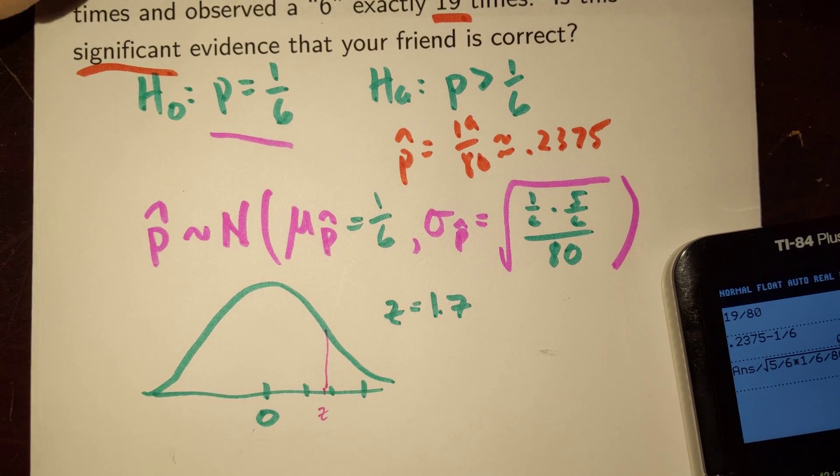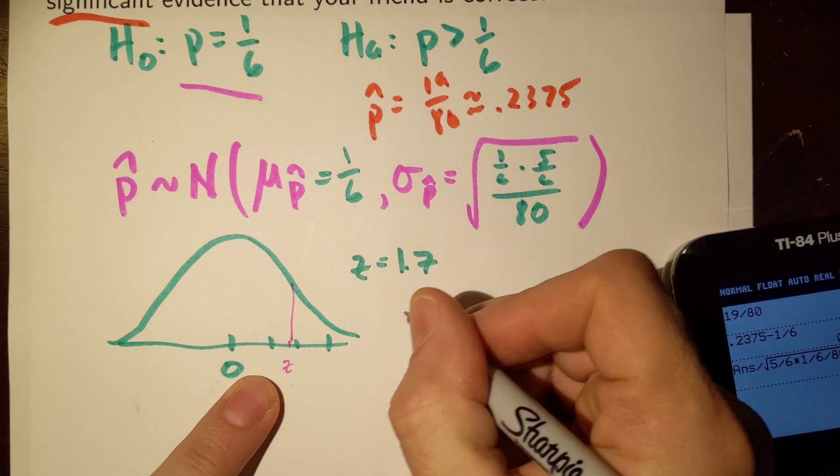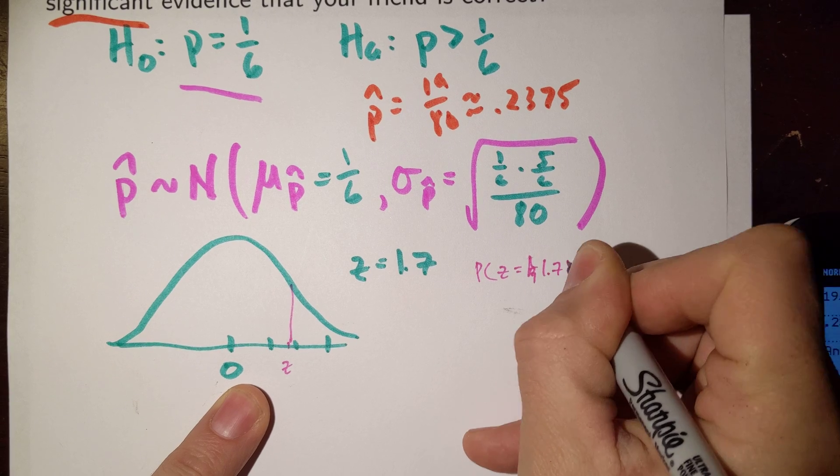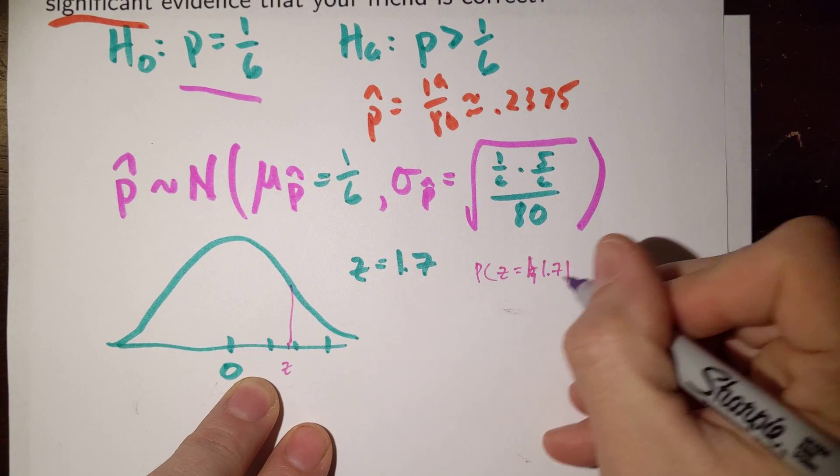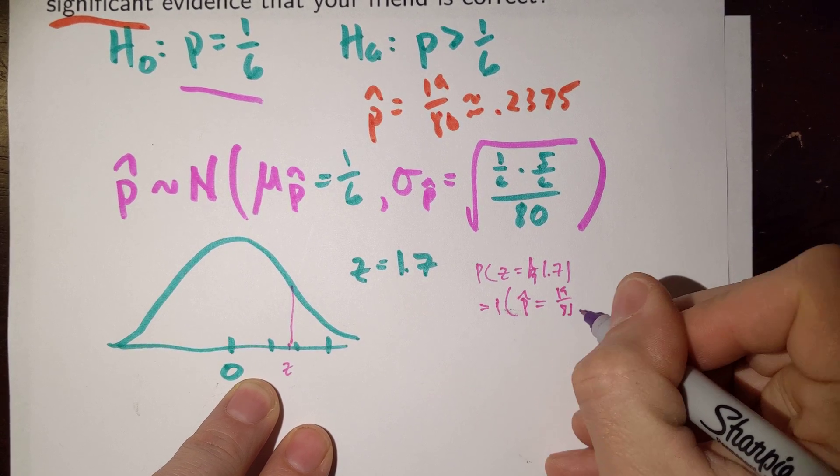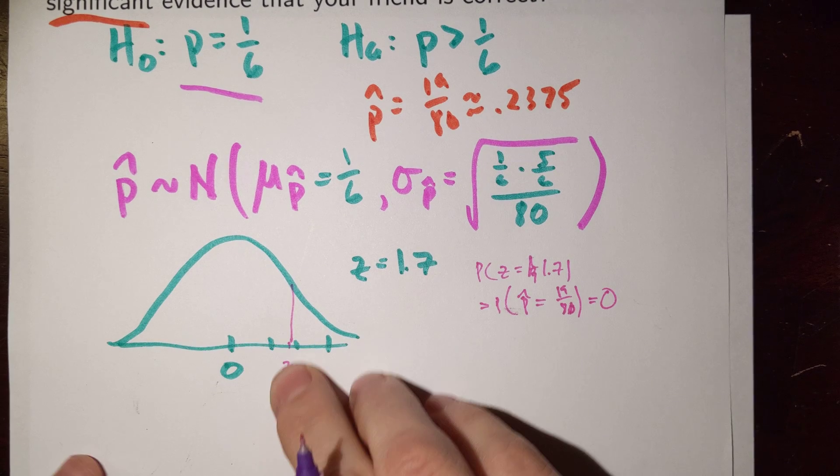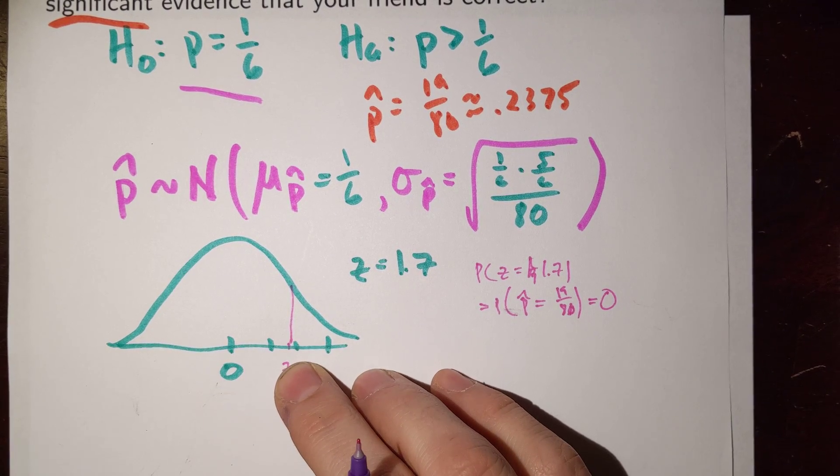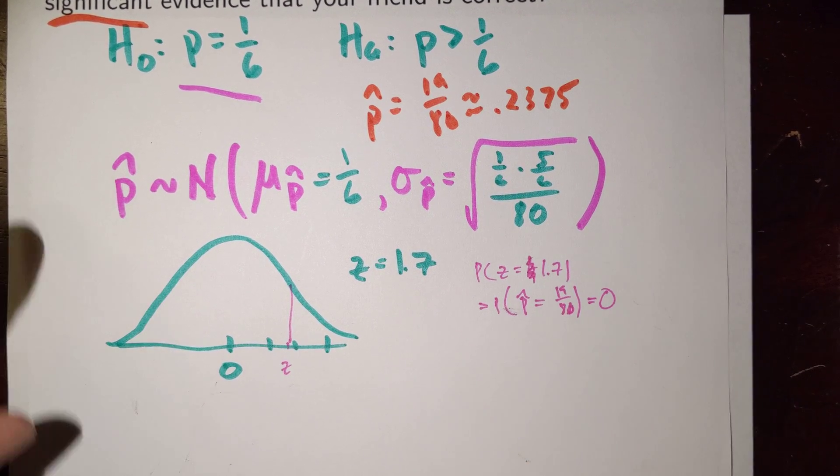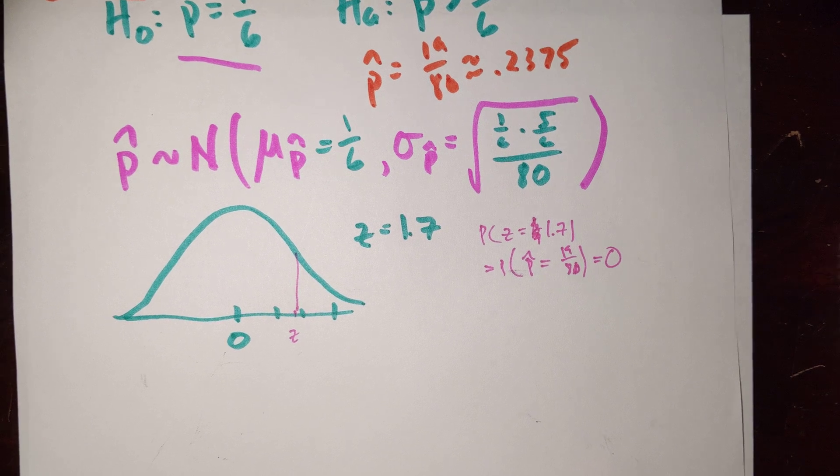And now I would ask, well, what's the probability that something has a Z-score of exactly 1.7? Well, the probability that Z would equal 1.7, or therefore, which would be the exact same thing as the probability that a p-hat would equal 19 out of 80? Well, we know the probability of exactly that is 0 because the area under the curve right there is clearly 0. So I'm not going to use the probability of exactly that value to decide what's significant, what's unusual, what's unlikely to happen by chance.